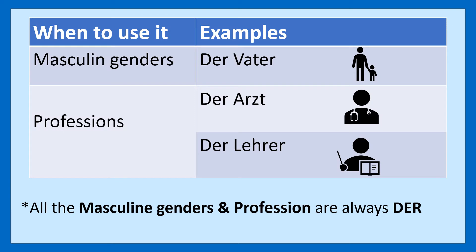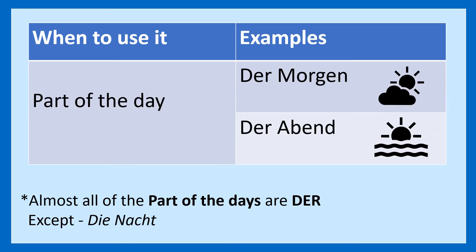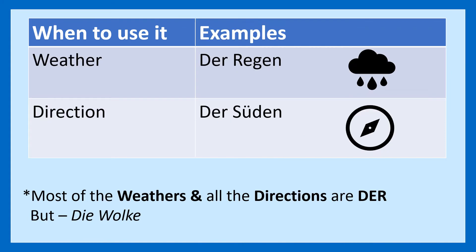Now I'm going to tell you some tips and tricks to know the masculine nouns, which use the definite article der. Der is used for masculine genders, like der Vater. It is also used for professions — der Arzt, der Lehrer. Seasons: der Sommer. Months: der April. Days: der Sonntag. Parts of the day: der Morgen, der Abend. Weather: der Regen. Direction: der Süden.